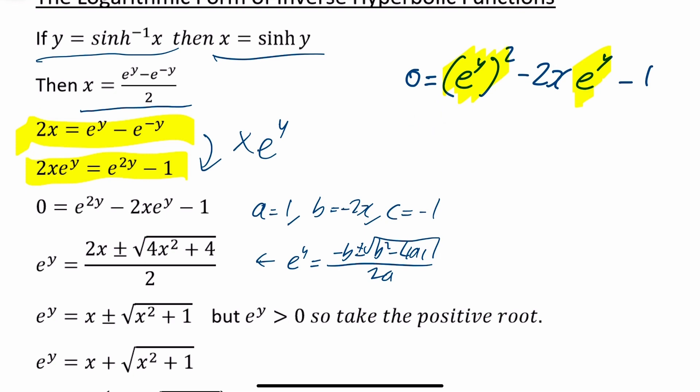Using the quadratic formula with a equals 1, b equals minus 2x, and c equals minus 1, e to the y equals minus b plus or minus the square root of b squared minus 4ac, all over 2a. Working that out: e to the y equals 2x plus or minus the square root of 4x squared plus 4, all over 2. Cancelling down, that becomes e to the y equals x plus or minus the square root of x squared plus 1.